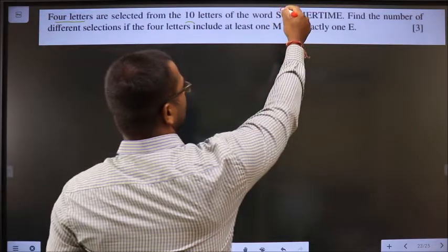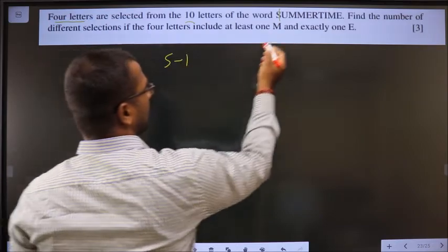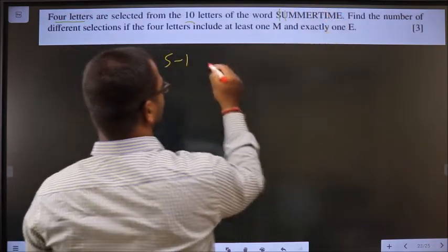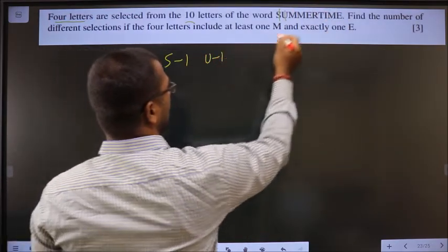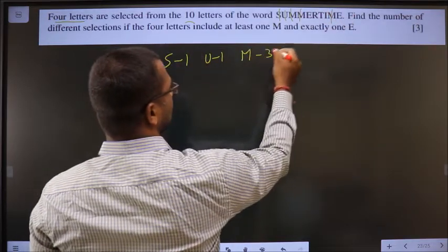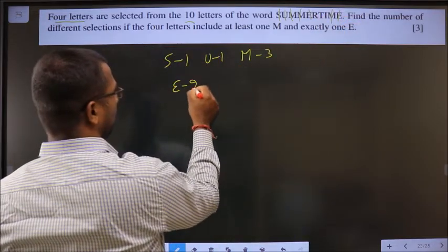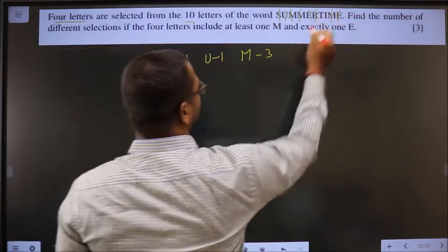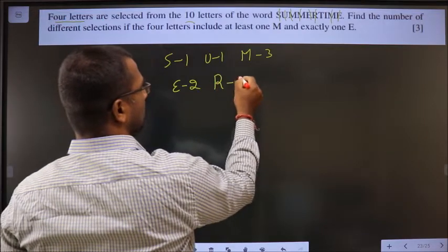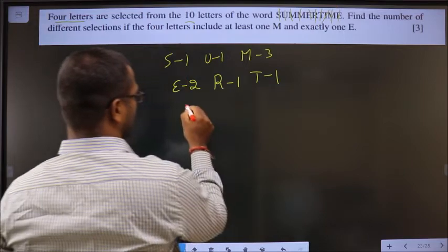So letter S has come only once. Next letter U has come once. Next letter M has come 3 times. Next letter E has come twice. Next letter R has come once. Next letter T has come once. I also once.